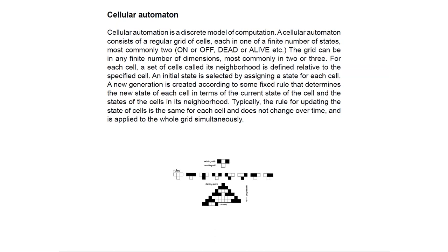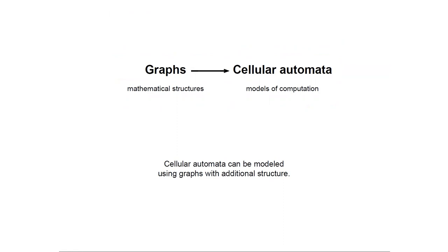There's a connection between these two topics: cellular automata are models of computation that can be modeled using graphs. Graphs are a mathematical structure, and all cellular automata models are basically graphs with some additional structure.